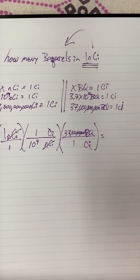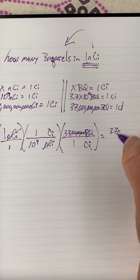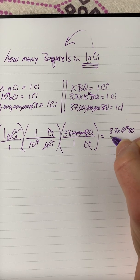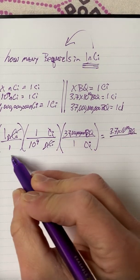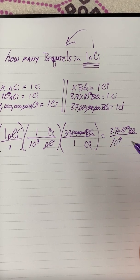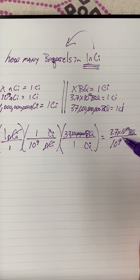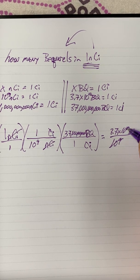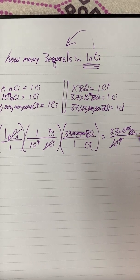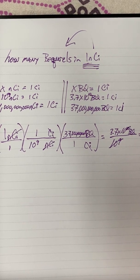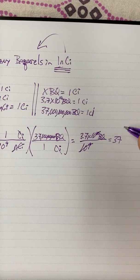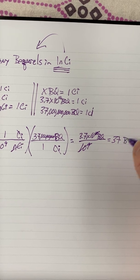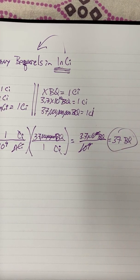That gives us 3.7 times 10 to the 10th becquerels divided by 1 times 10 to the 9th. We can cancel the 10 to the 9th, leaving 3.7 times 10 to the 1st, which is 37. So one nanocurie equals 37 becquerels.